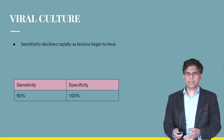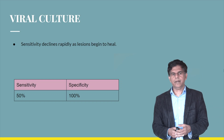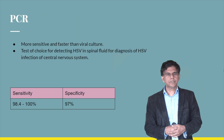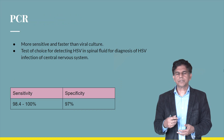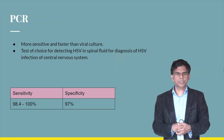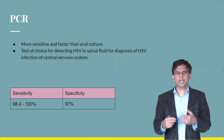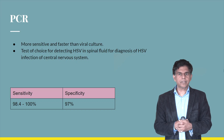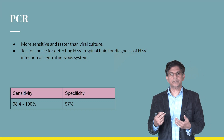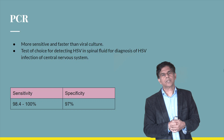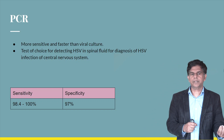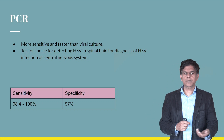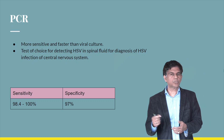PCR is very sensitive and faster than viral culture. It is also used for detecting HSV in spinal fluid for diagnosis of central nervous system infection. The PCR sensitivity is 98 to 100% and specificity is approximately 97%.